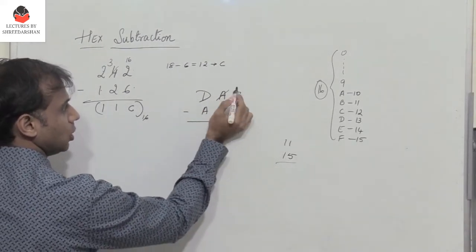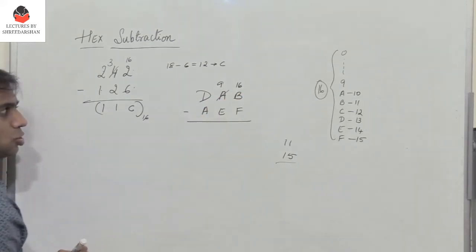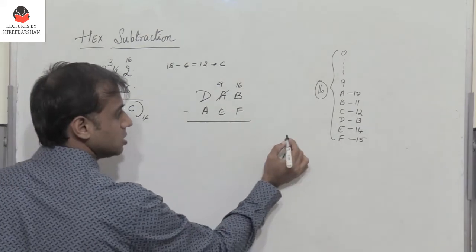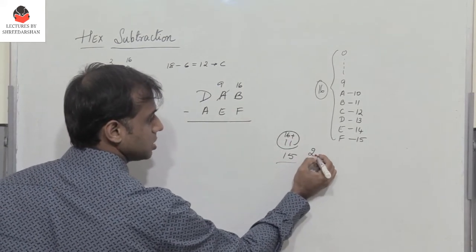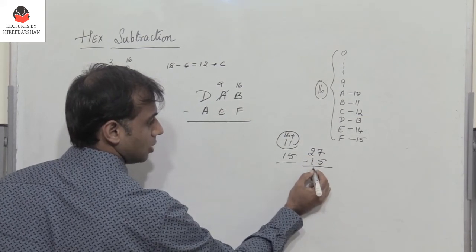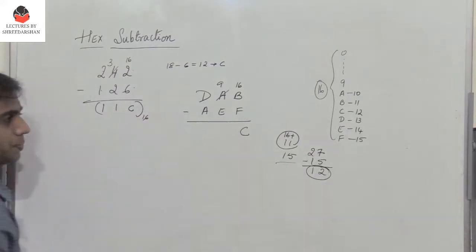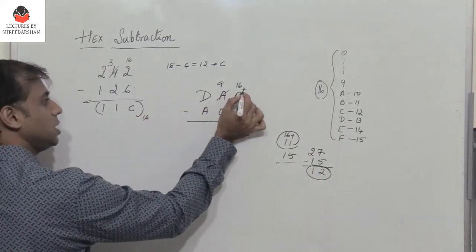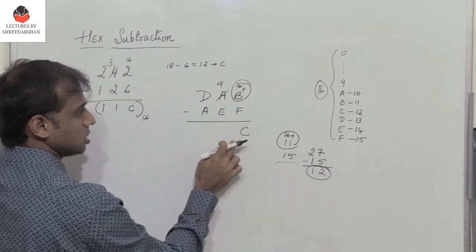A is 10. When I borrow, this becomes 9. I need to add 16 to B. So 16 plus 11 becomes 27 minus 15. What is 12? 12 is C. So you add 16 to B, which is 11. This becomes 27 minus 15, you get 12, which is C.